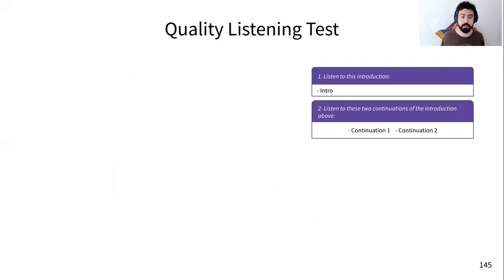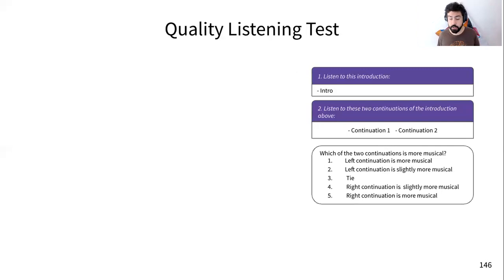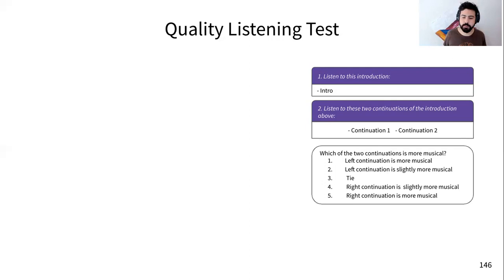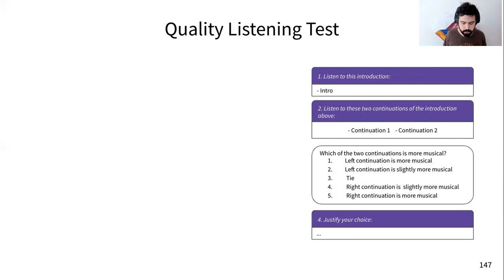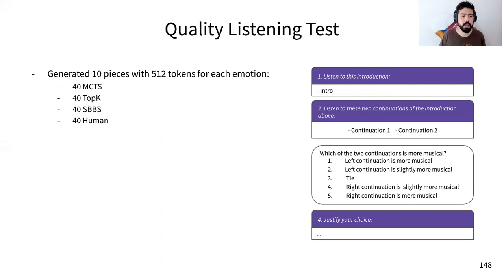To evaluate this model, we conducted a quality listening test where human subjects were given an introduction to a piece and had to listen to two different continuations — one from each system. They answered which continuation is more musical on a Likert scale from 1 to 5, where 1 means the left continuation is more musical, 3 is a tie, and 5 means the right is more musical, and they wrote a short justification sentence. We generated 10 pieces per emotion for four models: MCTS, top-k, SBBS, and human-composed pieces — 40 pieces per model, 160 total.